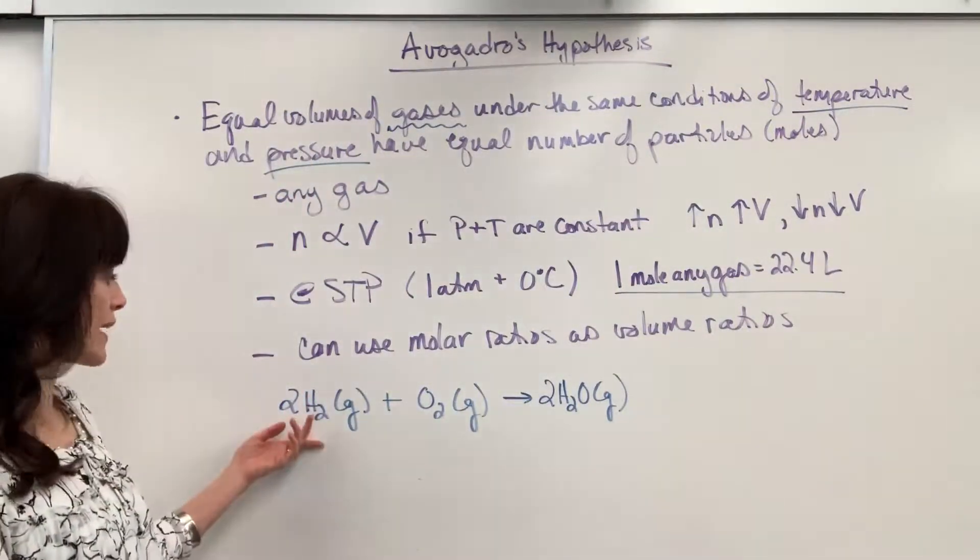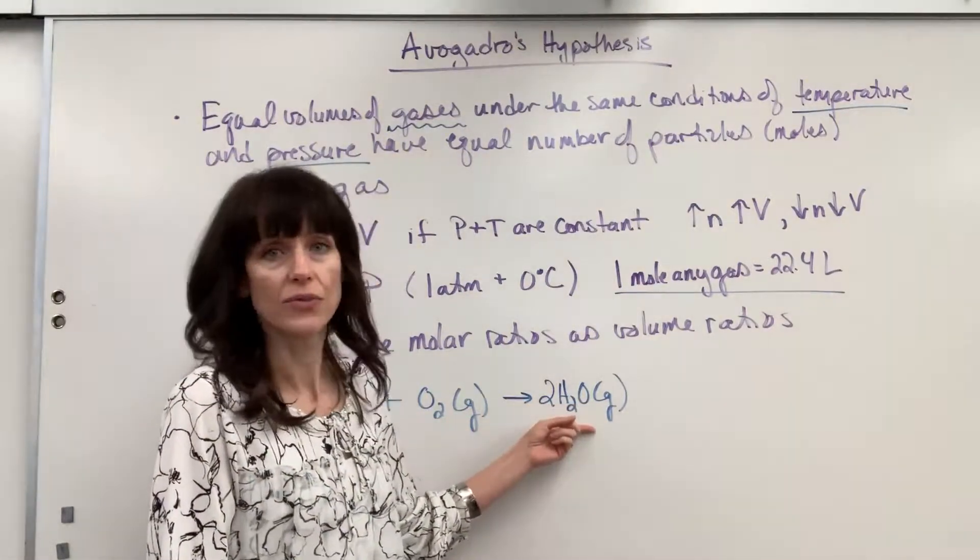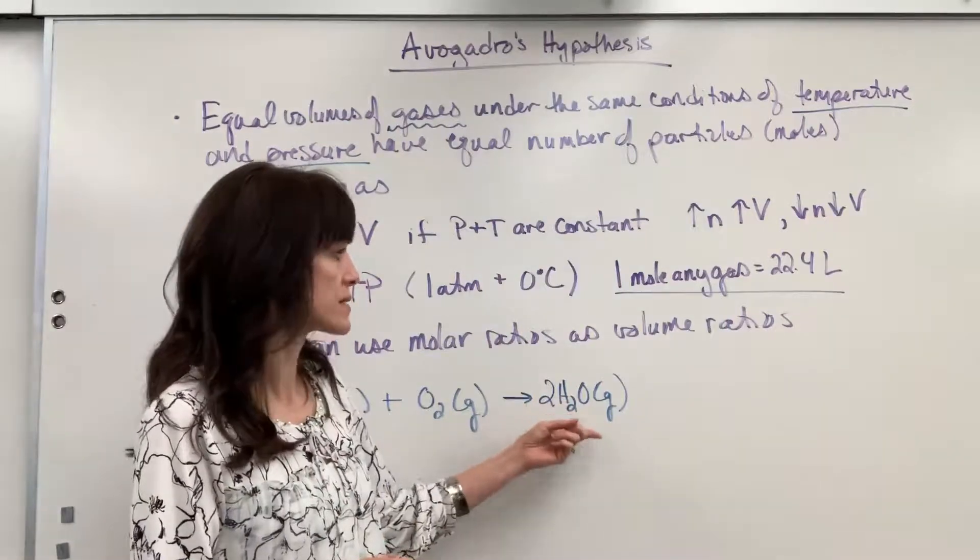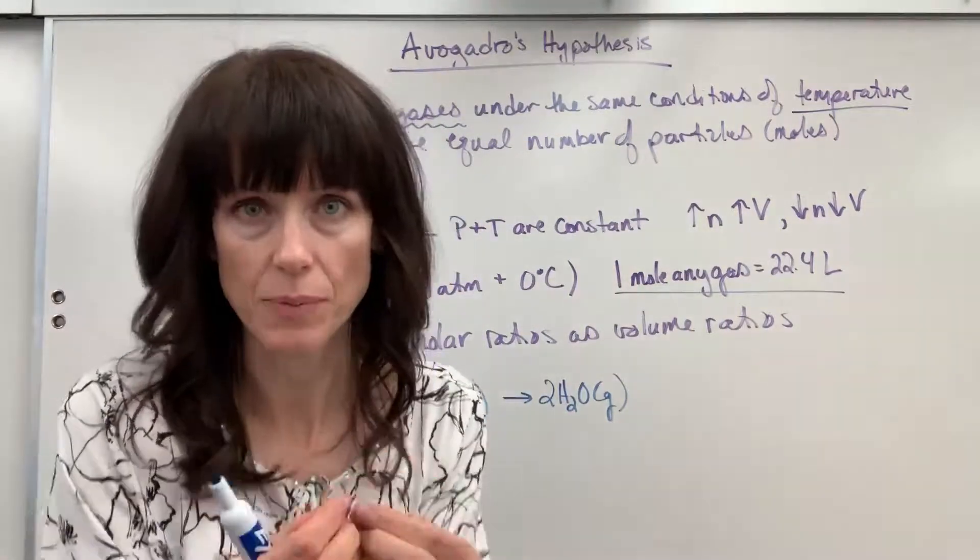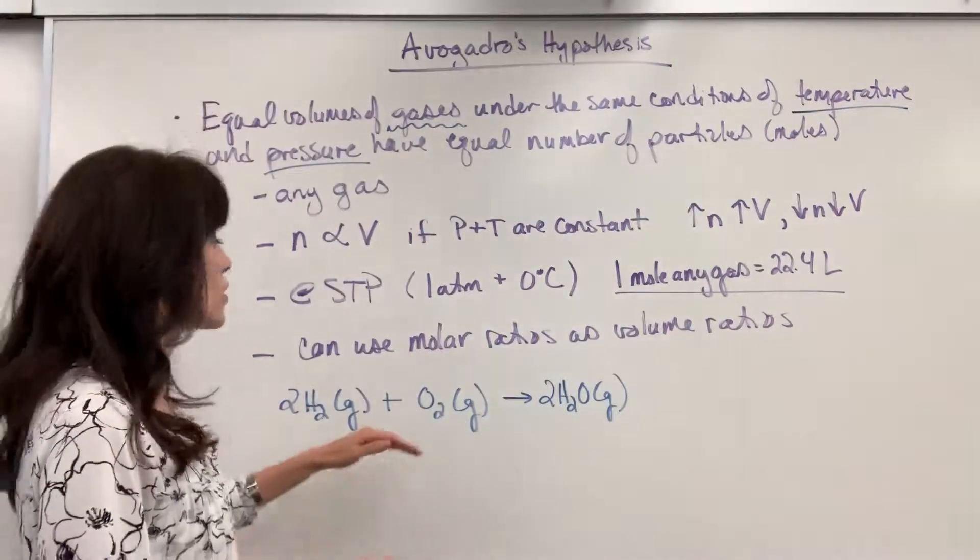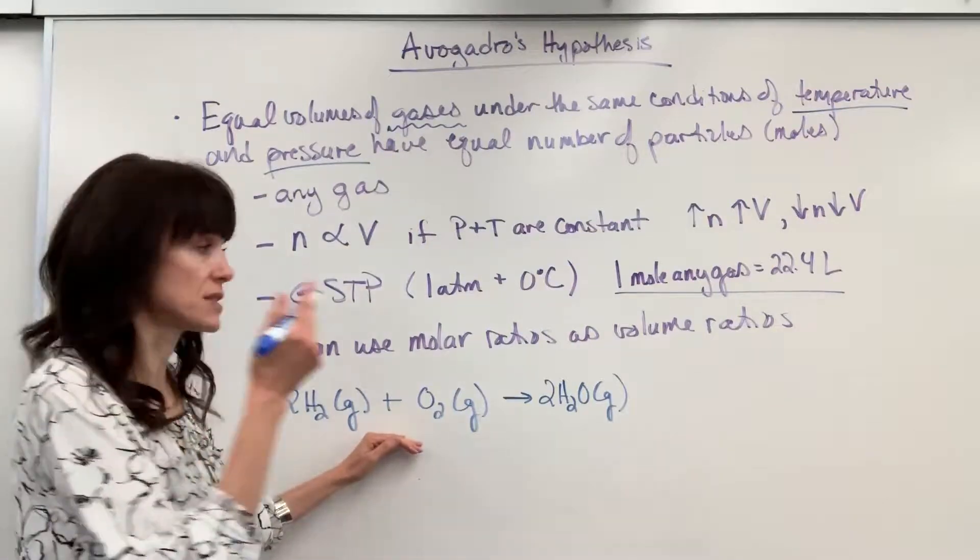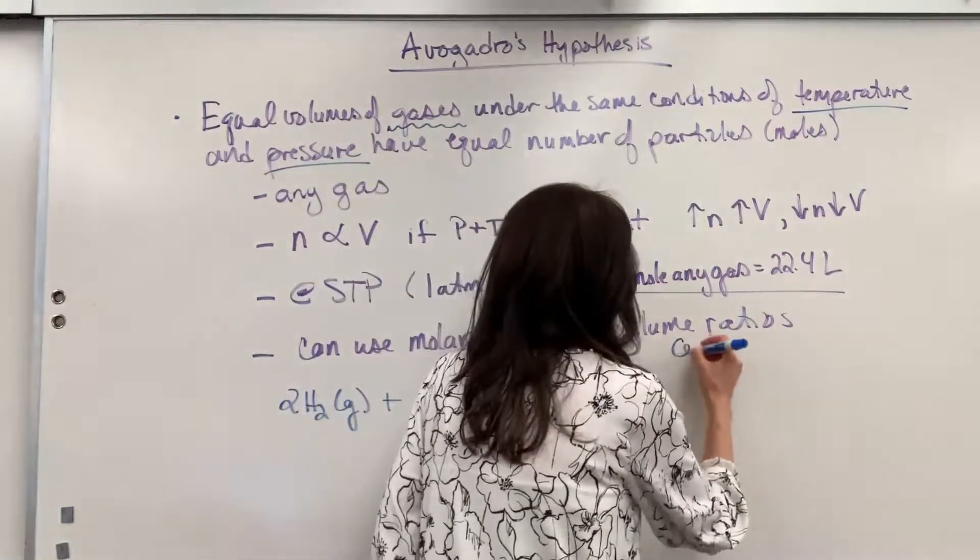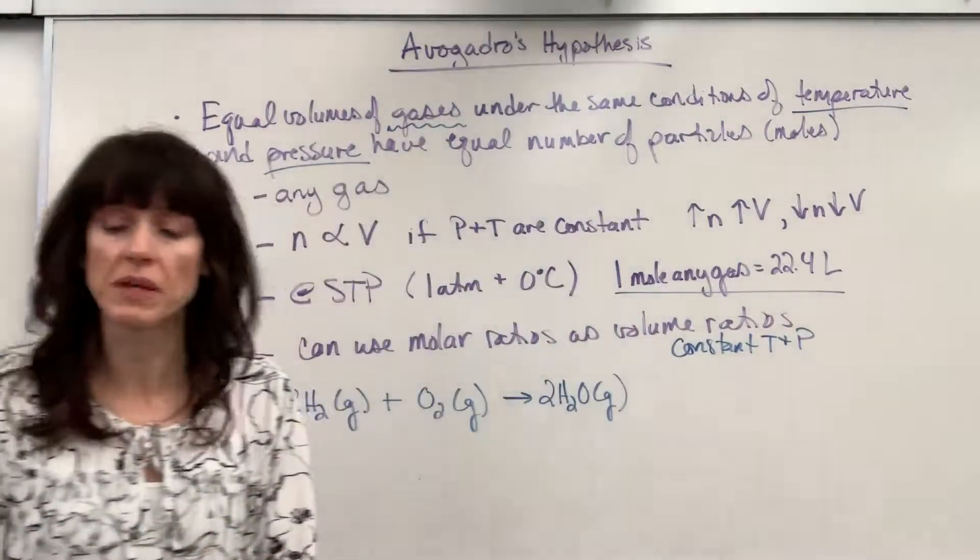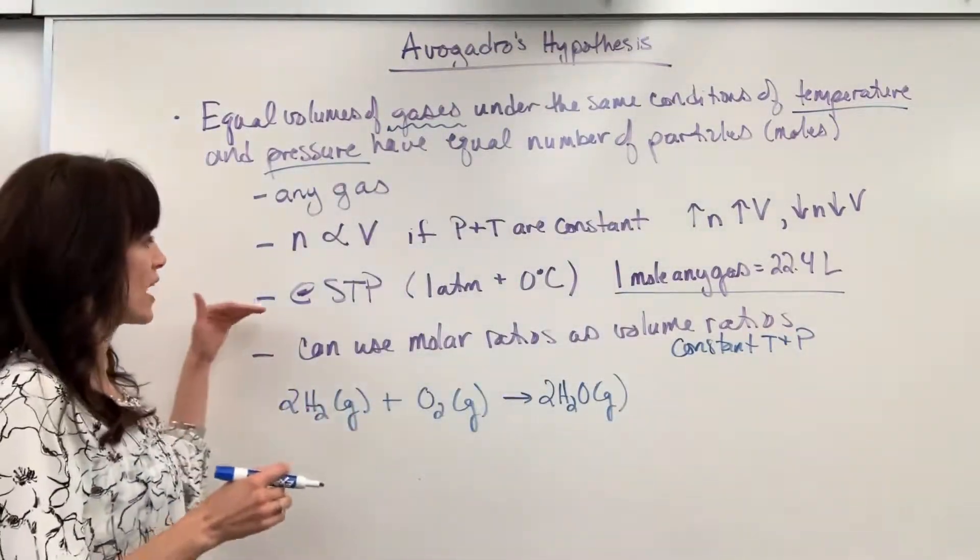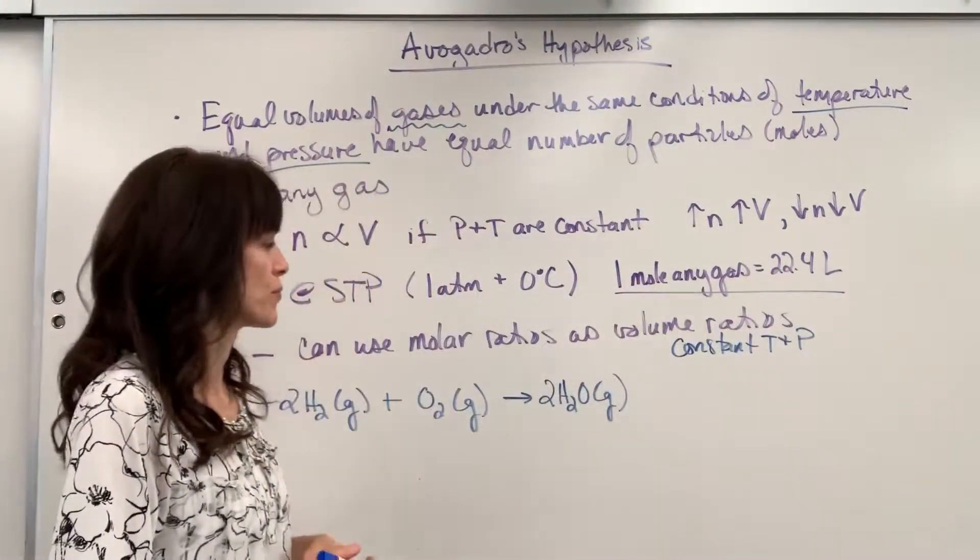So, this is how I'd read it. Two moles of hydrogen gas react with one mole of oxygen gas to produce two moles of water gas. Now, on this, I don't have to be at STP. But I do have to have constant temperature and pressure. So, let's put this down. We do have to have a constant temperature and pressure. It doesn't have to be at STP.